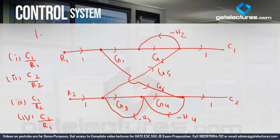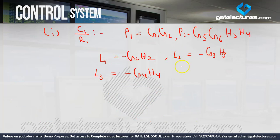Are there any more loops? Starting from G1 or other nodes, we cannot return — the directions oppose. So only three loops are possible. Now we check for non-touching loops. The loop G3 H3 and the loop G2 H2 are non-touching. Similarly, G4 H4 and G2 H2 are non-touching. So there are two non-touching loop pairs: L1 L2 and L1 L3.